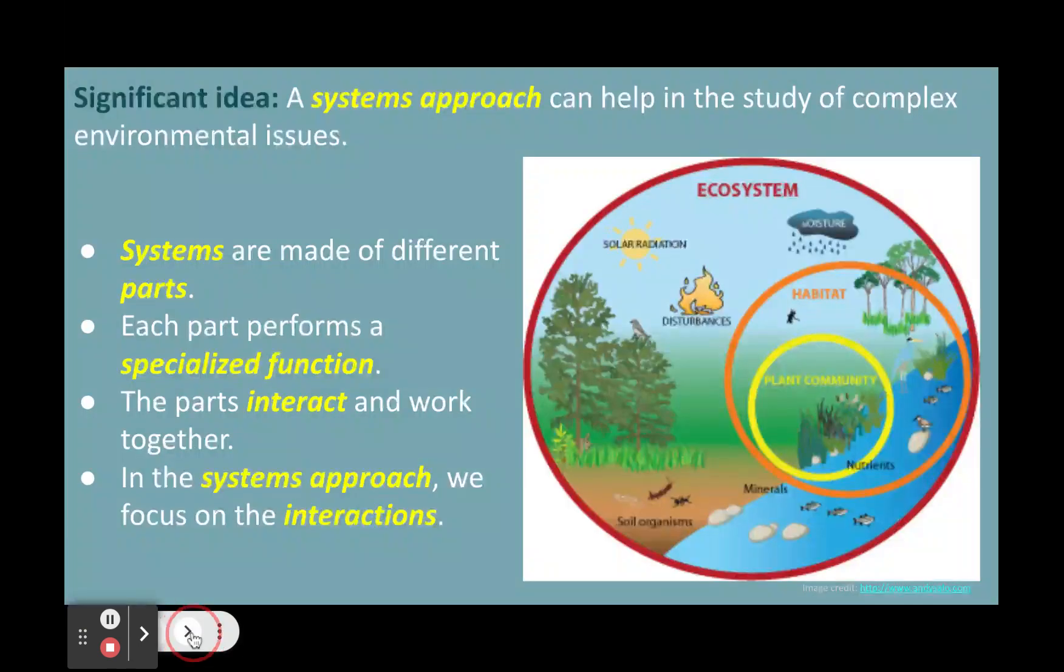First, let's define what a system is. A system is a set of interrelated parts that work together to form a complex whole. For example, an ecosystem is a system that consists of living and non-living components that interact with each other and exchange matter and energy.